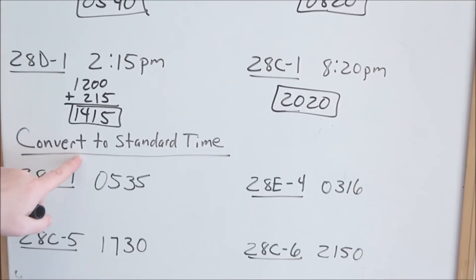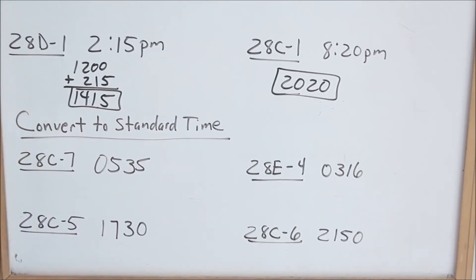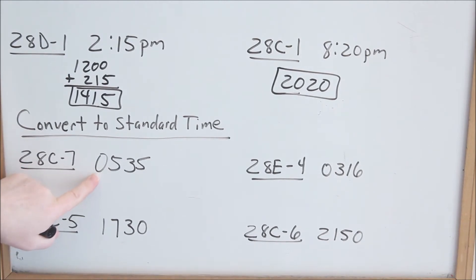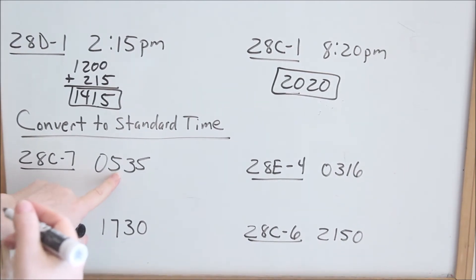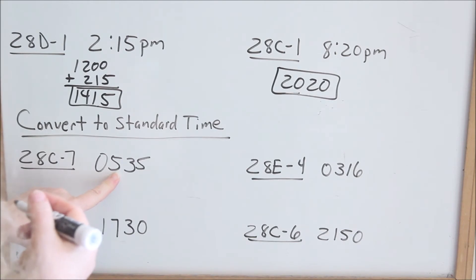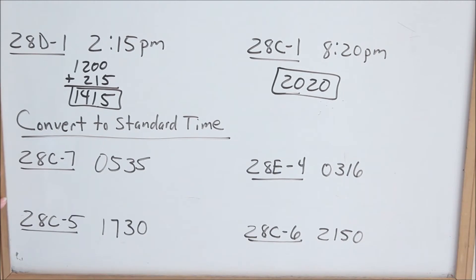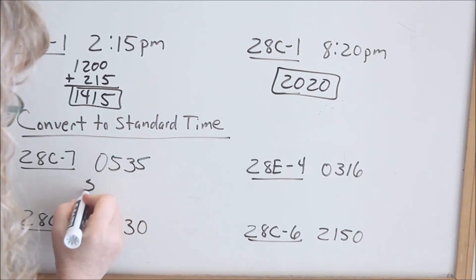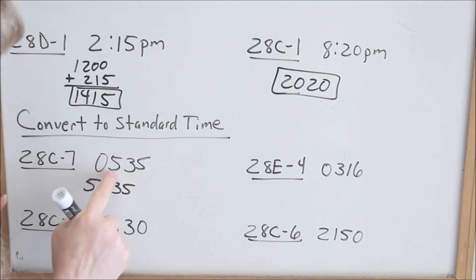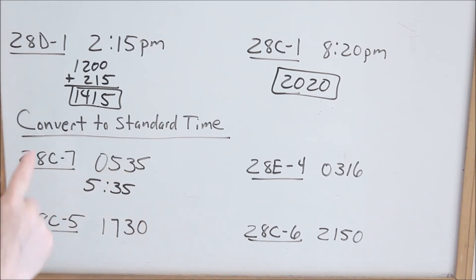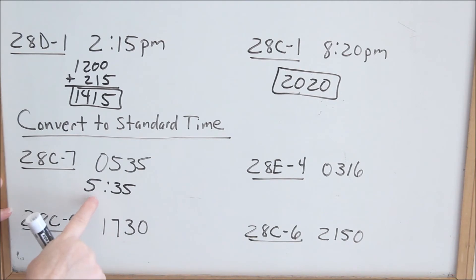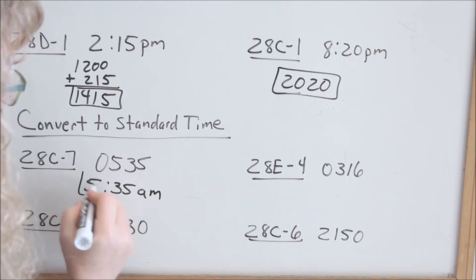Now let's go backwards and convert from military to standard time. When you see a zero in the first position, that's a good indicator you're in the morning. You're only in the 5th hour of the day — five hours from midnight. So five hours from 12 a.m. is just 5:35 in the morning. The first two digits are your hours, and the last two are your minutes. It's really important to write a.m. or p.m. in standard time — if I say 5:35, you don't know if that's 5:35 a.m. or 5:35 p.m.